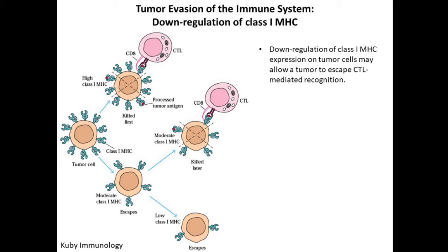Next, in order to evade the immune system, what the tumor cells do is decrease the expression of MHC class 1. If they decrease the expression of MHC class 1, the tumor antigen that was initially being expressed properly on the cell surface now has decreased expression. Because of this, the cytotoxic T lymphocyte is not able to target the tumor cells properly, and in the lower part of the figure you can see that this tumor cell with very low MHC class 1 expression has escaped from being a target of the CTLs.